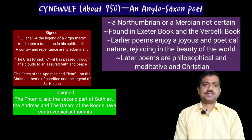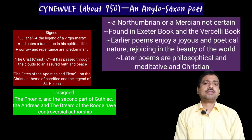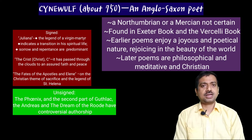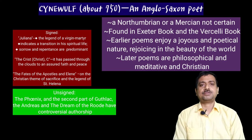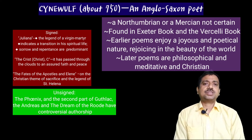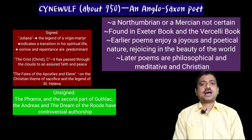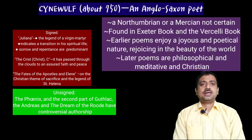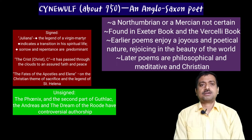Around 750 we have Cynewulf, another great poet. This Anglo-Saxon poet was either Northumbrian or Mercian — it is not entirely certain. His literary outputs are contained in the Exeter Book and the Vercelli Book. His earlier poems enjoy a joyous and poetic nature, rejoicing in the beauty of this world. His other poems are quite philosophical and meditative with Christian elements. Some of his poems are signed by him and some are not, and scholars have identified his poems by his signature writing.